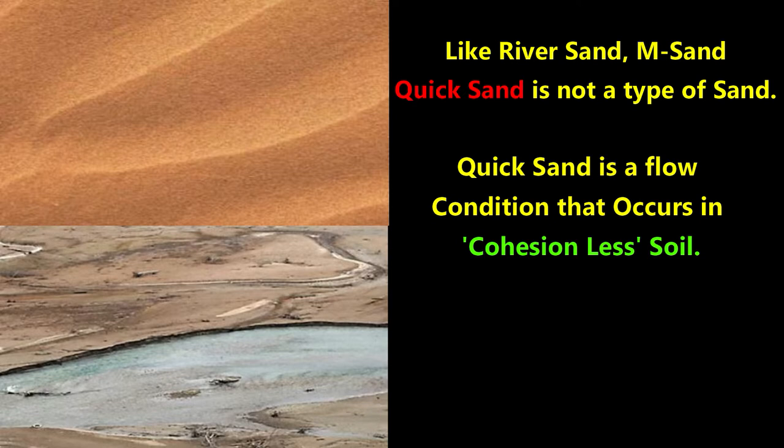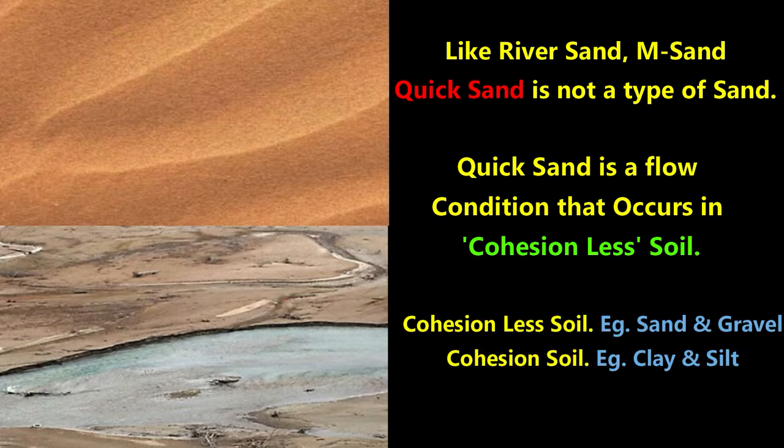Quicksand is a flow condition that occurs in cohesionless soils. Cohesionless soils are soils where the soil elements do not stick together. The best example is sand. If the soil particles stick together, then it is called cohesive soil — the best example being clay. Today we are talking about a cohesionless soil condition, that is the quicksand condition.